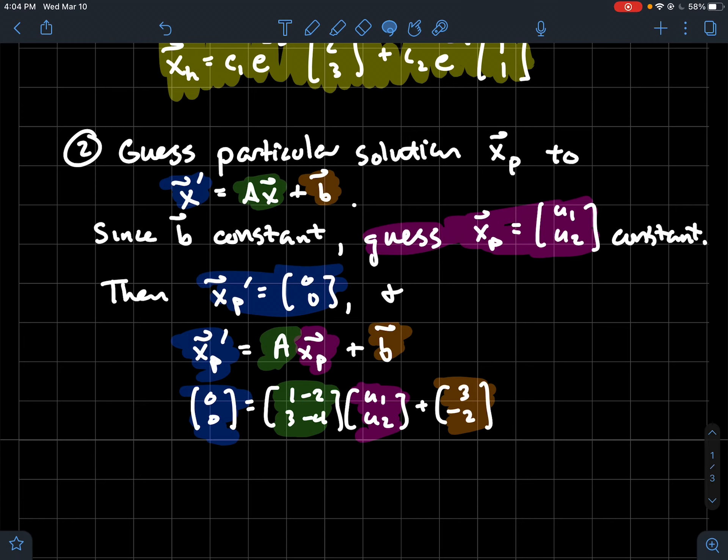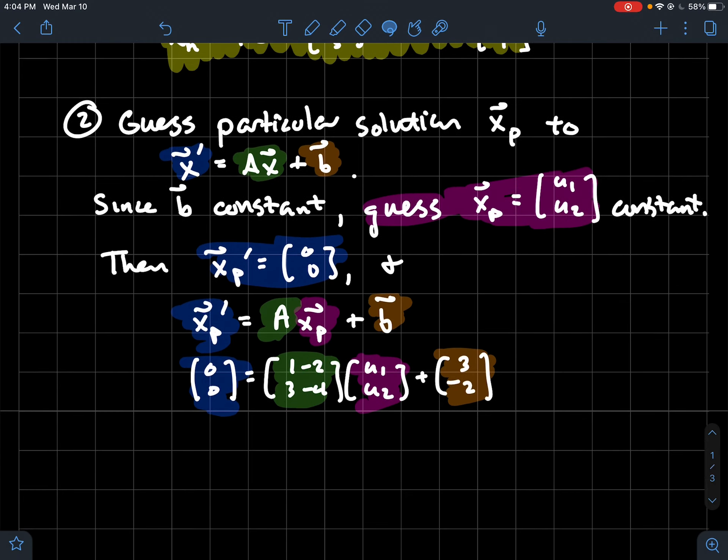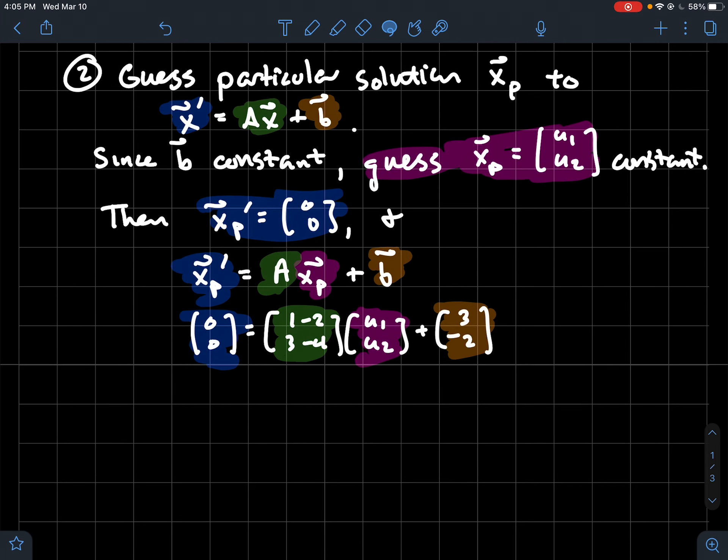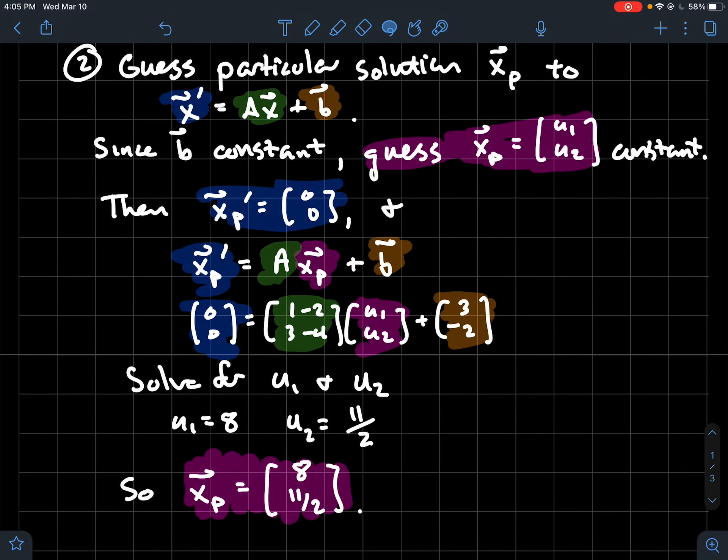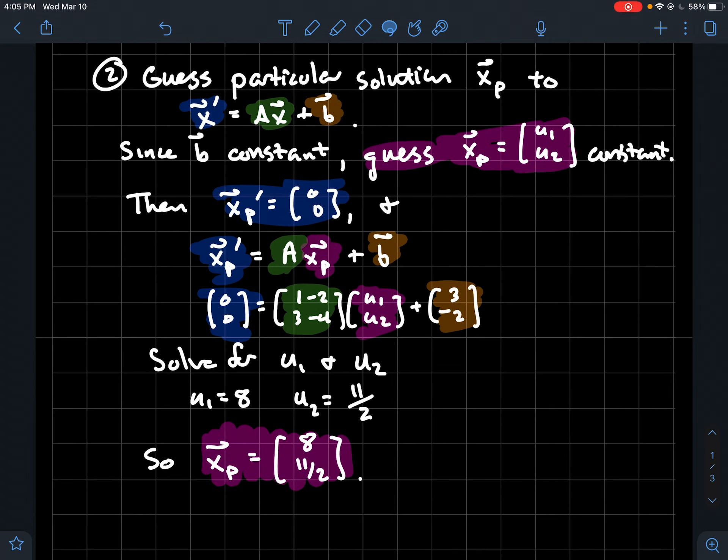You could solve that for u1 and u2. You could turn it into a system and do it by hand, you could use Wolfram Alpha, write this out as a matrix equation, you can do whatever you like to find u1 and u2. When you do, you should get u1 is 8 and u2 is 11 halves. So a particular solution to this system should be just the constant vector 8, 11 halves.